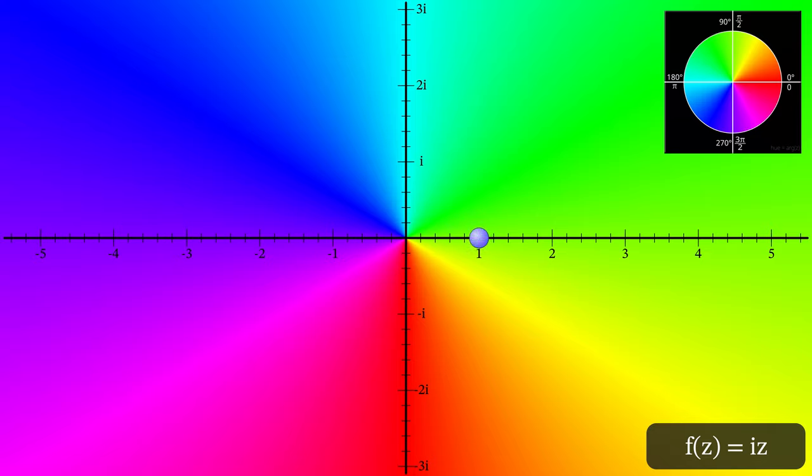So for example the point z equals 1. The color is greenish so we know that the output lies somewhere on the positive imaginary axis. Phase portraits are very powerful in their own right. And as we shall see in later videos they can reveal a great deal of information about a function. But they do lack magnitude. We lose our sense of scale.